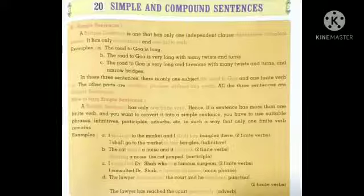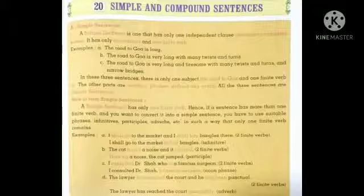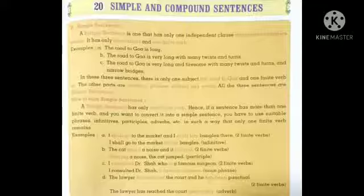And the last is the lawyer has reached the court and he has been punctual. अब यहाँ पर देखे दो finite verbs है अब हम क्या करेंगे, adverb का use करेंगे. The lawyer has reached the court punctually. तो यहाँ पर देखे adverb का clue तो आपको पता है जिसके पीछे ly होता है most of वो adverbs होते है. अब देखे जो सारे sentence थे उसमें पहले दो finite verbs थे फिर हमने line by line infinitive, participle, noun phrase और adverb का use करके उस sentences को simple sentences में form कर दिया यानि simple sentences बनाए.